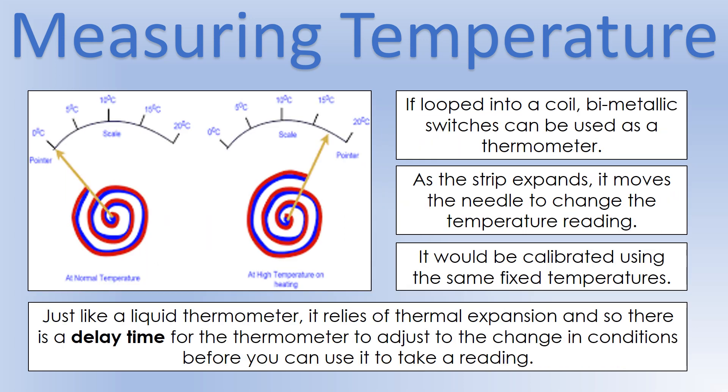The other thing you can do with a bimetallic strip is actually make thermometers. So what you do is you actually wrap it up into a coil, like you can see. And then you use the end of the coil to push a needle or a pointer around on a temperature dial. So that's what you can see here. We can see it on the right at higher temperature. It's expanded, which has pushed the pointer or the needle around, indicating a higher temperature. So we would make this the same way we would a liquid-based thermometer. So we would calibrate it using 0 degrees and 100 degrees, for example, and then divide that into divisions. And we'd choose metals for our strip that have a linear expansion with temperature. So we're thinking about the same things, even though it's a different design.